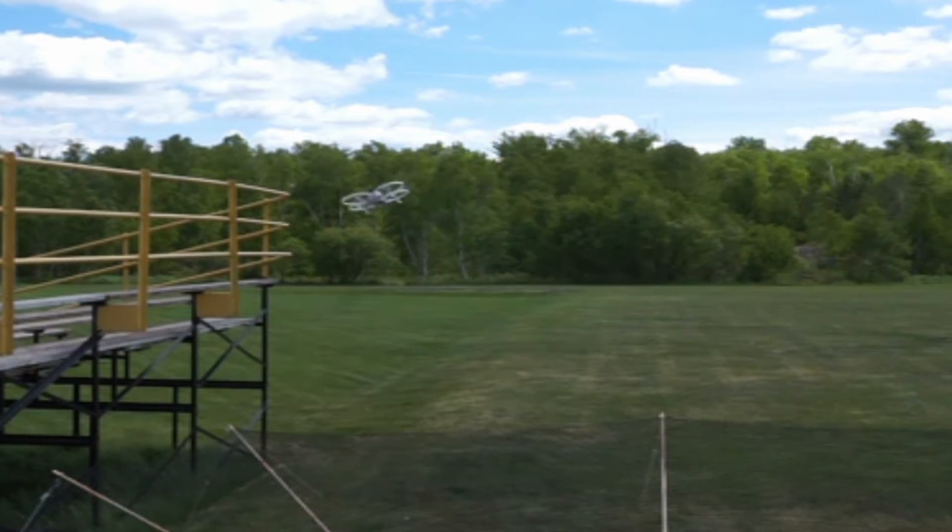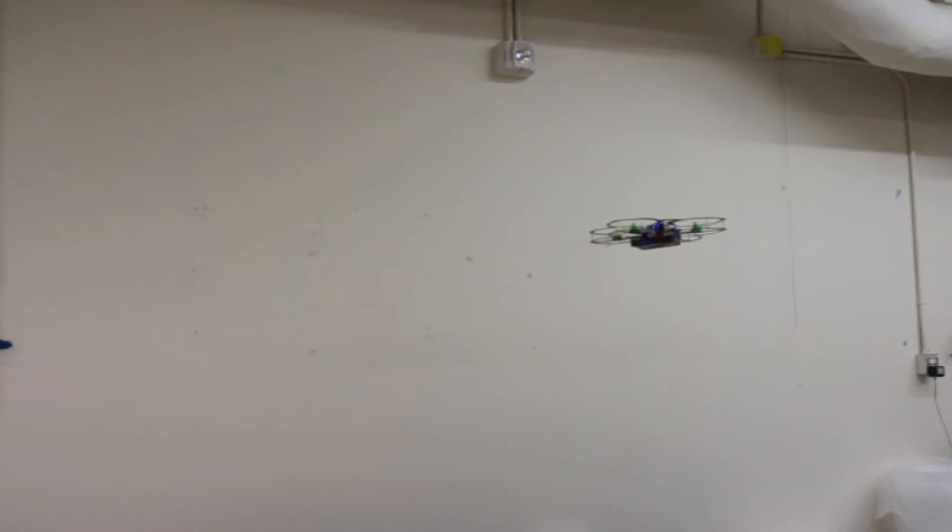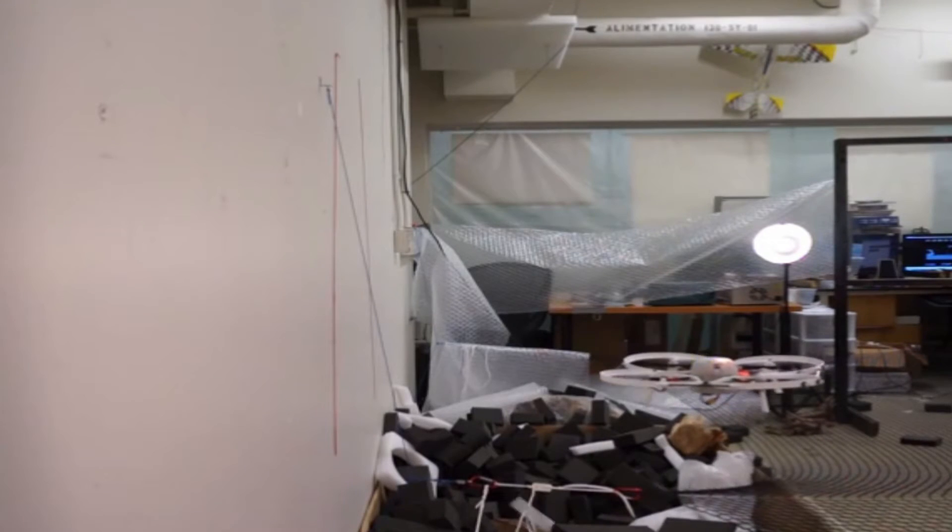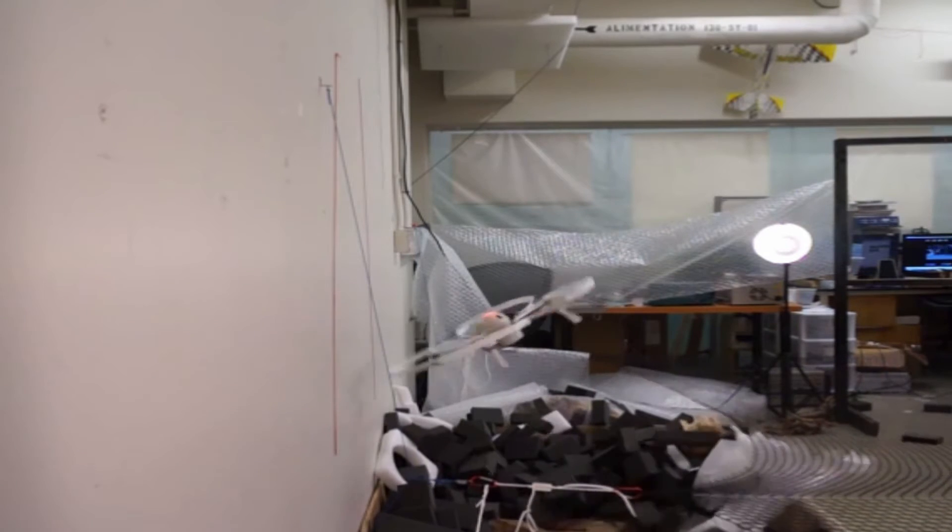Quadrotor drone flight controllers currently do not detect or react to collisions with stationary objects. Many platforms now incorporate bumpers which protect the quadrotor's propellers. Under position control, platforms such as these generally collide unintelligently and often result in complete loss of flight stability.